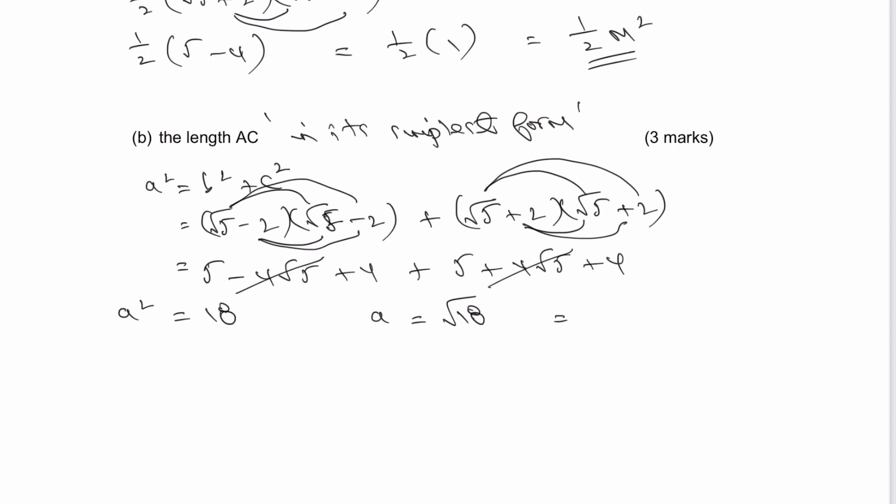Which is actually then in its simplest form 3 root 2. So AC, which is what we're looking for, is equal to 3 root 2. And in its simplest form, that would be the answer to that particular question.